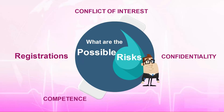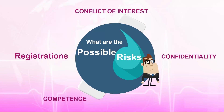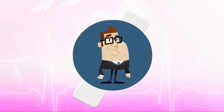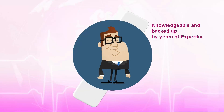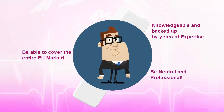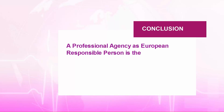Further risks: fourth, competence — who will advise you on EU regulations? For example, will a distributor in Romania know the national laws in France or Germany? Probably not. Fifth, expertise — who will have the expertise to represent you during an EU authority inspection? The RP must be knowledgeable and backed by years of expertise, be able to cover the entire EU market, and be neutral and professional. Conclusion: a professional agency as European responsible person is the most recommended solution for the manufacturer.